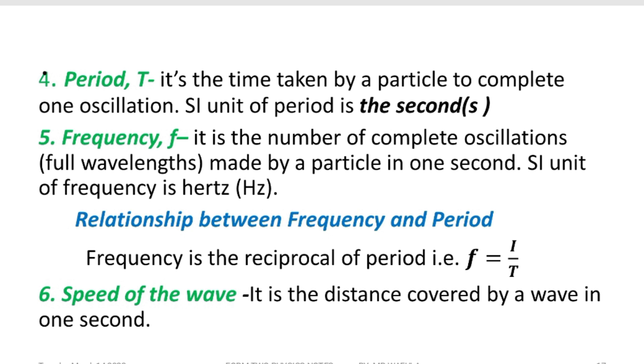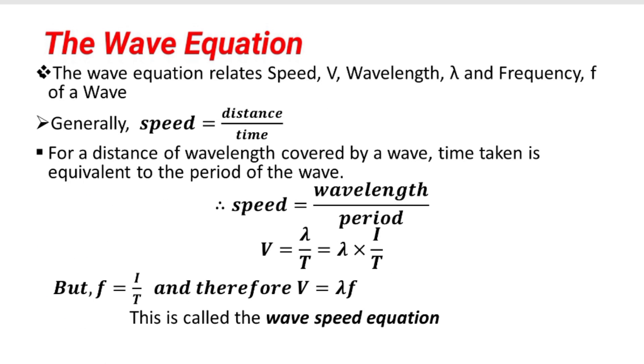Speed of the wave, distance covered between two successive crests or troughs in one second. The wave equation is derived from speed equals distance over time. Distance for this case is the wavelength, time is the period. So, lambda divided by T. But F equals 1 over T. That's how we come up with V, or velocity of a wave, is given by lambda times frequency.